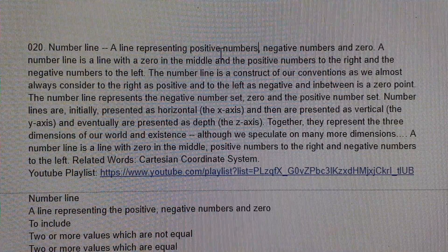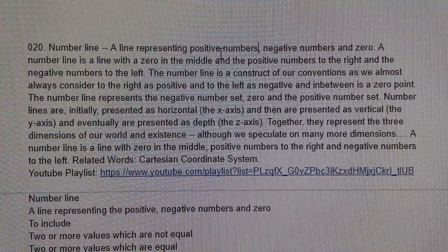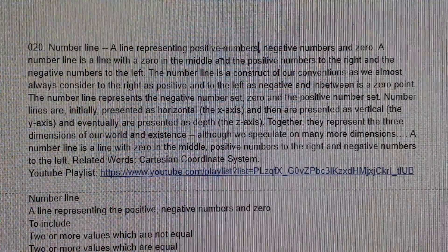A number line is a line with a zero in the middle, and the positive numbers to the right, and the negative numbers to the left.